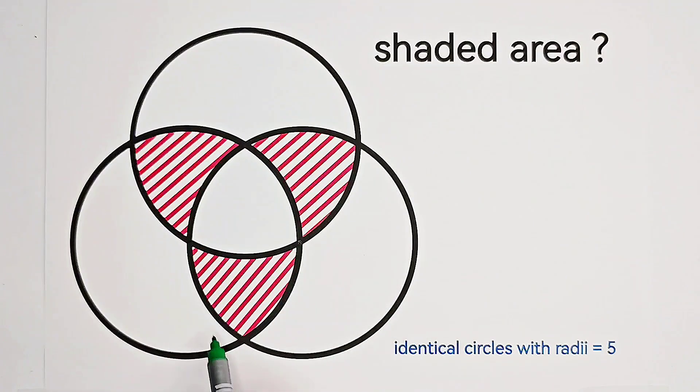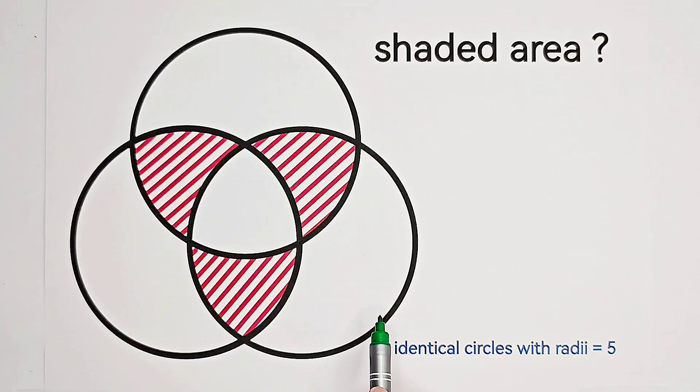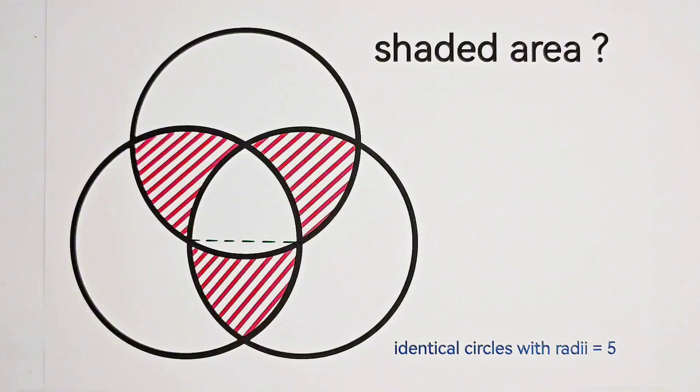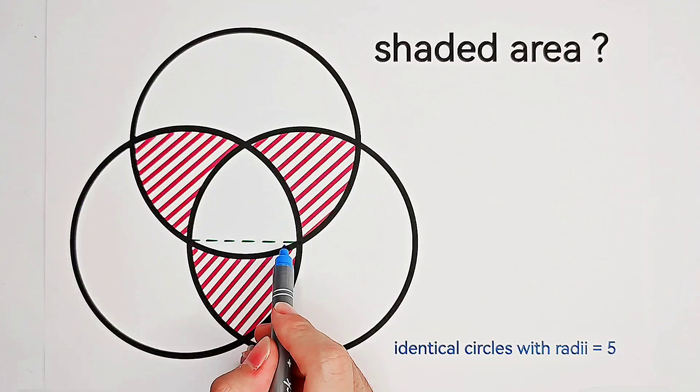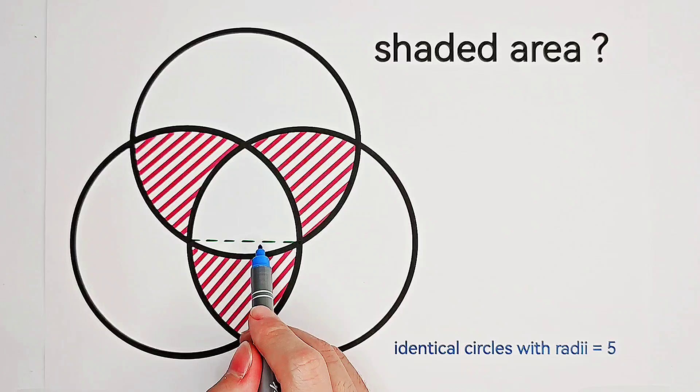These two intersections are the two centers of these two circles. Now, connect them. Now, how long does this green line segment measure? 5.